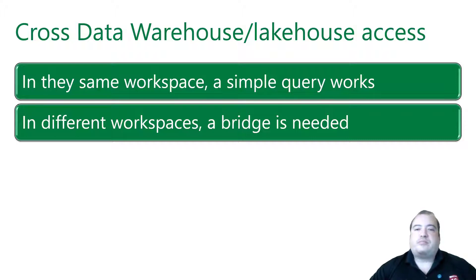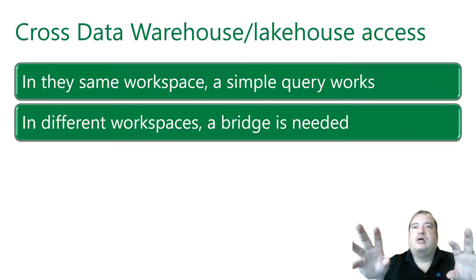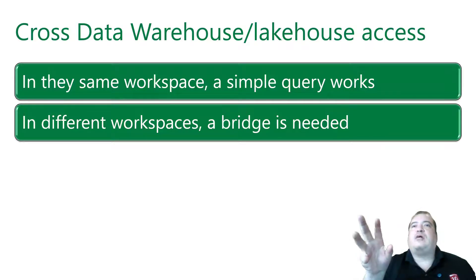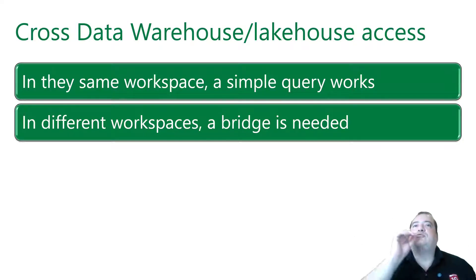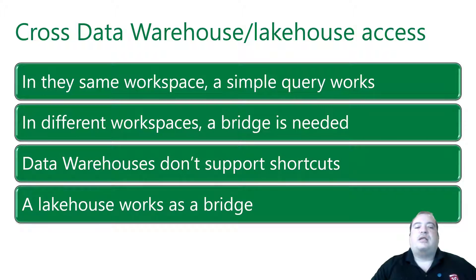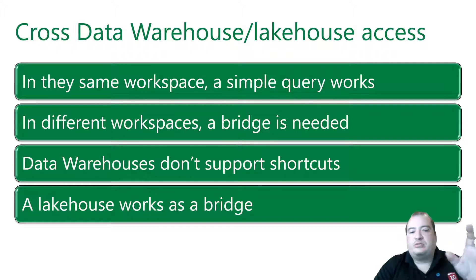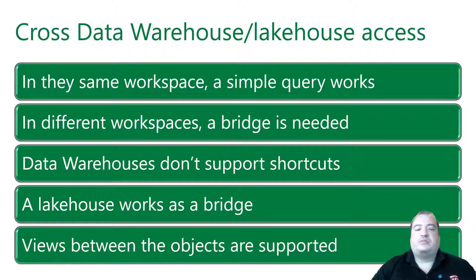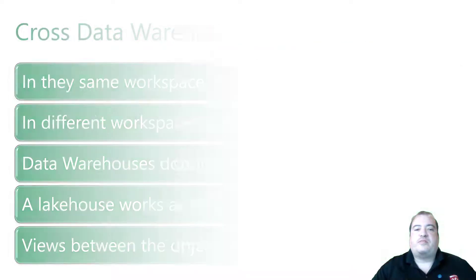Let me simplify a bit more. This bridge approach is for the data warehouse to access the lake house. If it's the opposite — for the lake house to access the data warehouse — a shortcut can be created directly, since the lake house supports shortcuts but data warehouses don't. So we create a third lake house object to work as a bridge, and views between the objects are supported.